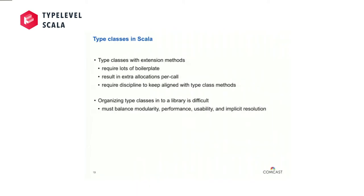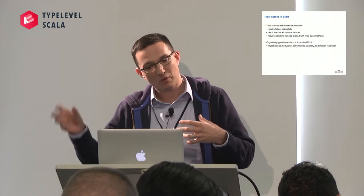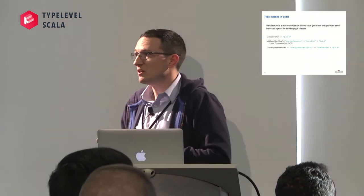My point in this intro is that organizing type classes into a library and making that library easy to use is difficult. There are a lot of different knobs to turn, and it's not always obvious that if you turn a knob here it has rippling effects elsewhere. And frankly, if we want to promote type classes and their adoption in Scala, we need some mechanism to manage or avoid this complexity. For that reason, we get to our first project today that addresses this infrastructure: Simulacrum.